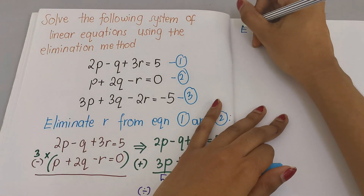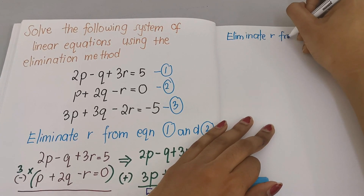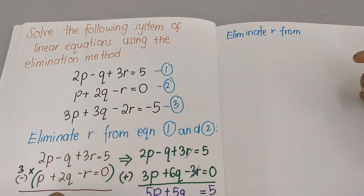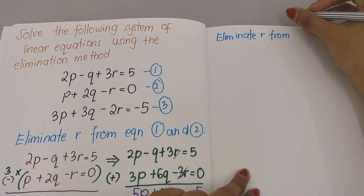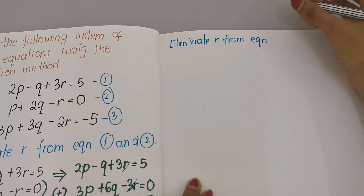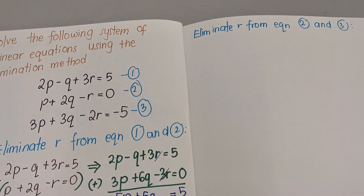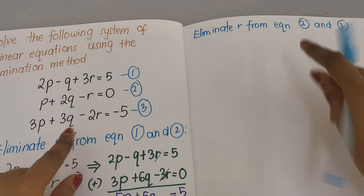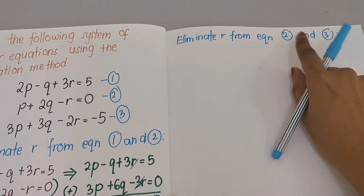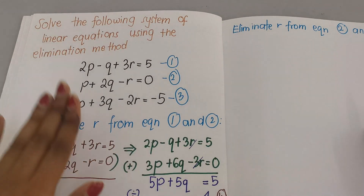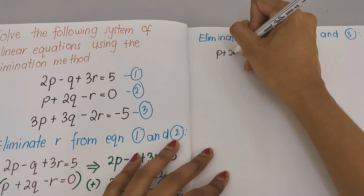Now we need to eliminate r again, but this time using a different pair of equations. We already used equations 1 and 2, so now we choose equations 2 and 3 — or you could choose 1 and 3. The key is to use a different pair so we get a second new equation.